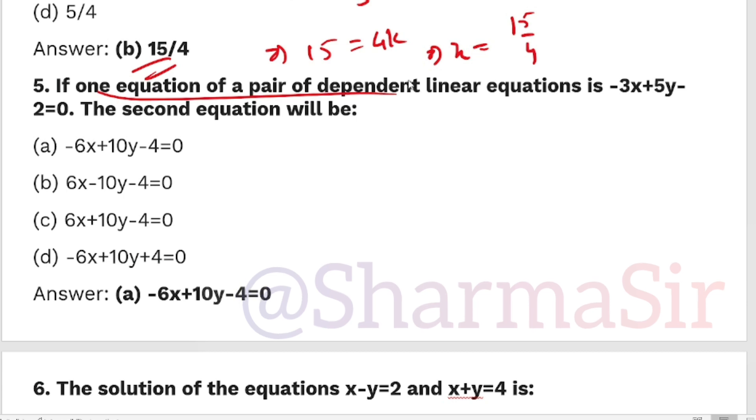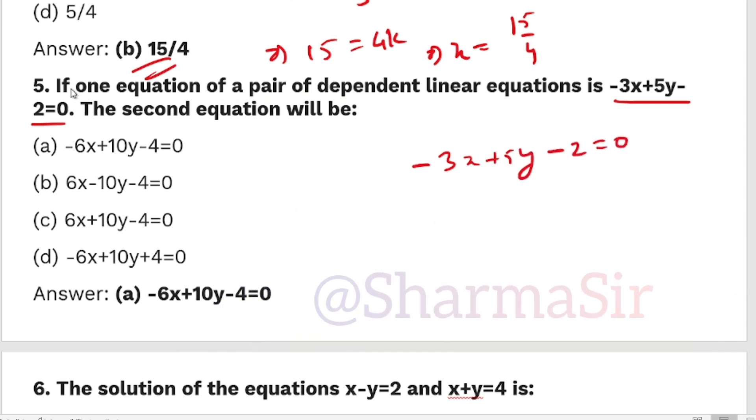If one equation of a pair of dependent linear equations is -3x+5y-2=0, the second equation will be: dependent linear equations means coincident. So if we multiply by 2: -6x+10y-4=0. Looking at the options, -6+10-4 is one form.